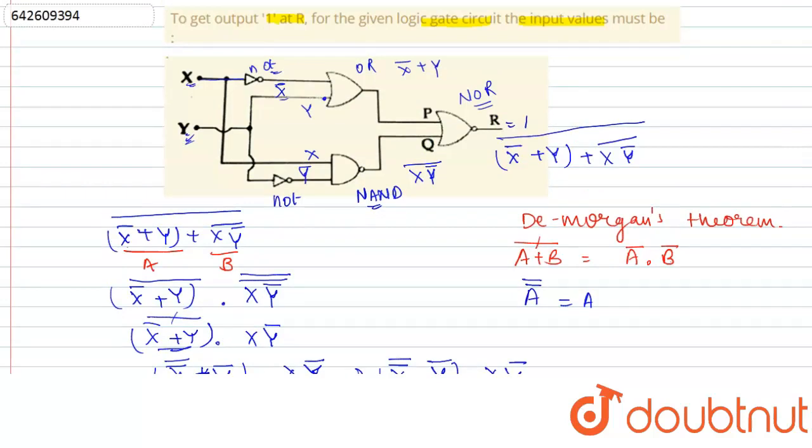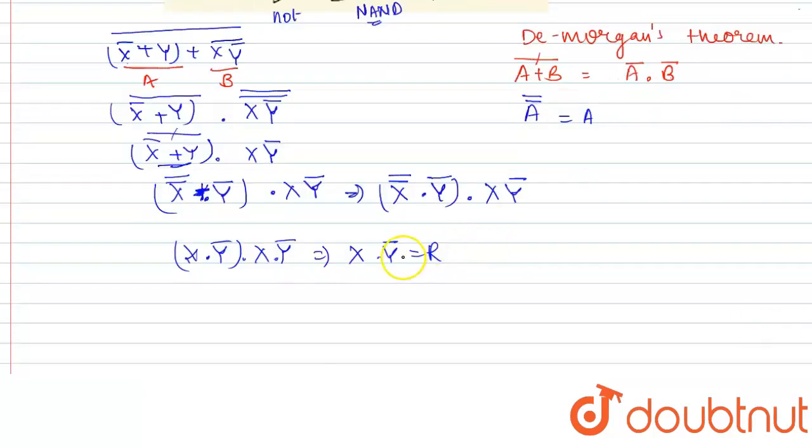So if we want the value of R to be 1, let us consider x to be 1 and y to be 0. If y will be 0, then ȳ will be 1. And if x equals to 1, then x·ȳ, that is 1·1, will give 1. So the value of x should be 1 and value of y should be 0. That is our final answer.